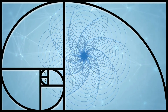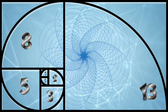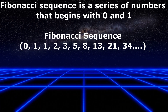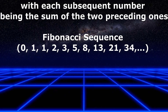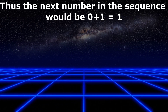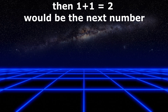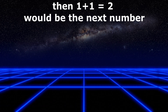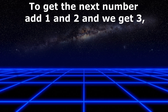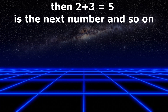Let's first understand what the golden ratio and Fibonacci sequence are, and how they are linked to each other. The Fibonacci sequence is a series of numbers that begins with 0 and 1, with each subsequent number being the sum of the two preceding ones. Thus, the next number in the sequence would be 0 plus 1, that is 1. Then 1 plus 1 equals 2. To get the next number, add 1 and 2 to get 3. Then 2 plus 3, that is 5, is the next number, and so on.